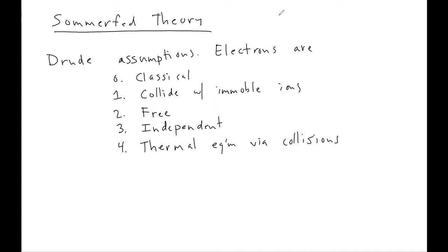We assume that the electrons reach thermal equilibrium by this process of collisions. This list of assumptions in some sense serves as an outline for the course. Having talked about the Drude model, we're now going to gradually dismantle and relax these assumptions one by one.